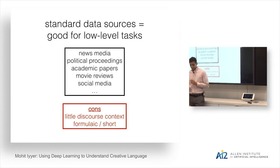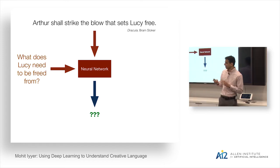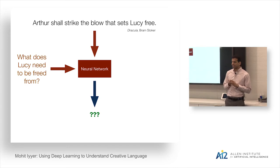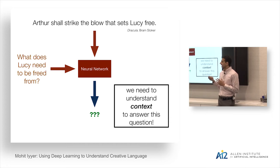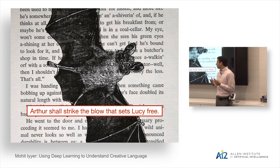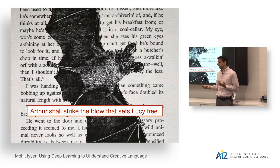To give an example, consider the question: 'What does Lucy need to be freed from?' I can't answer this by looking at the sentence in isolation — I actually need to understand the context, which in this case is the entire book of Dracula preceding that sentence. To answer this question, I have to understand who Arthur and Lucy are, the nature of their relationship, and the series of events that led up to the point where Lucy needs to be freed. This context is much more complicated than what you would find in a news article.